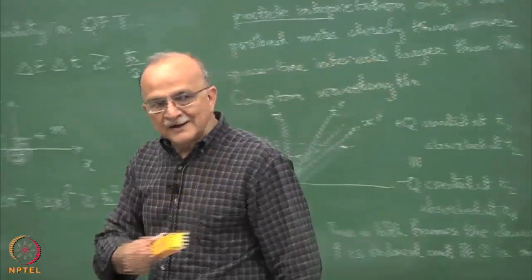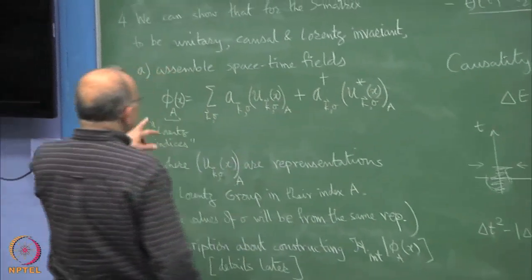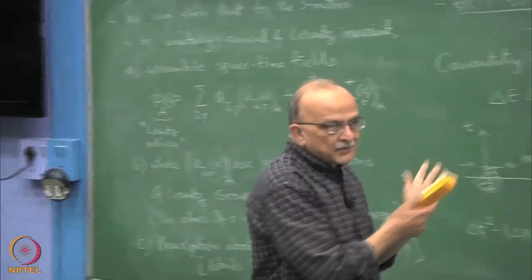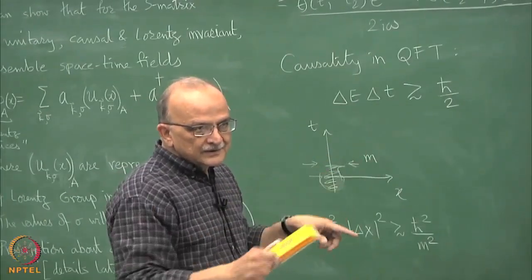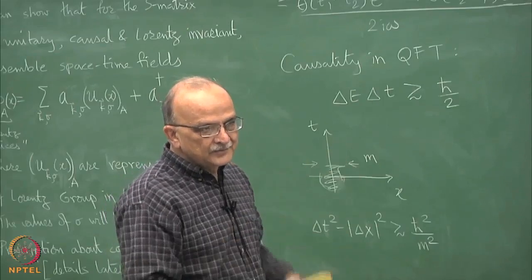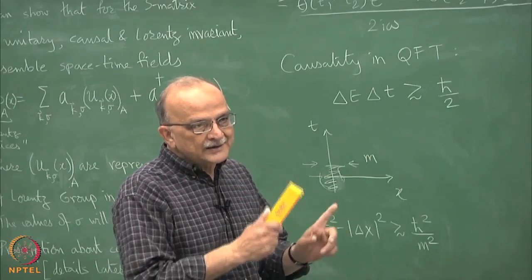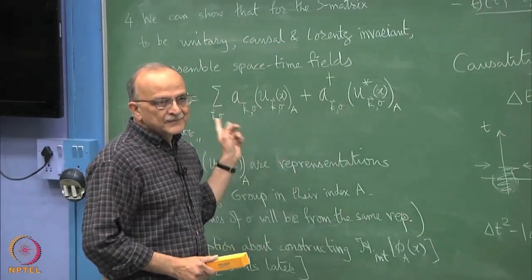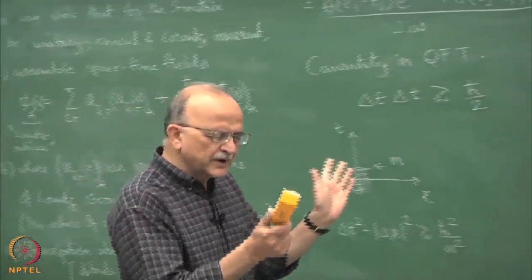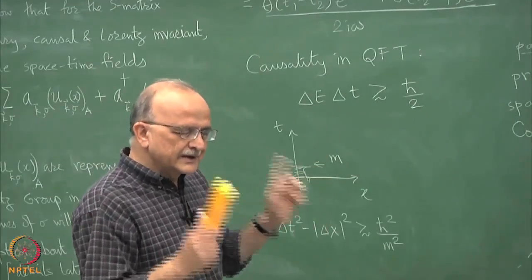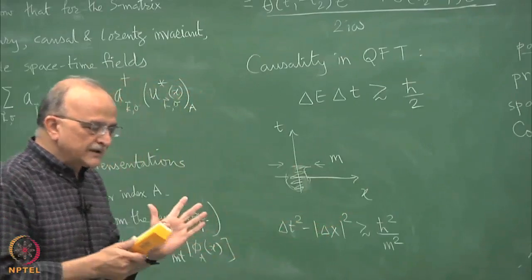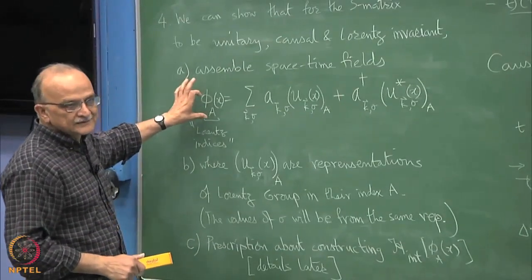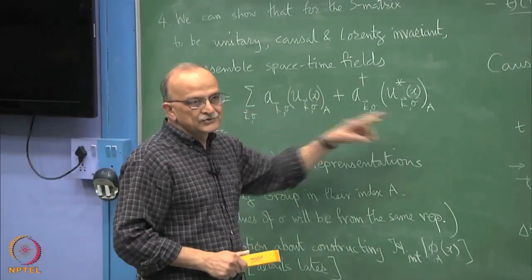The causality statement is that only if you assemble them like this, will you get that support on the light cone if you take their commutators. If you calculate their Feynman propagator, only if they have been assembled in this form. Actually it is the two point function, you calculate their commutator, that commutator will be relativistically covariant only if you have assembled them as space time fields like this, with both this and its conjugate part included.